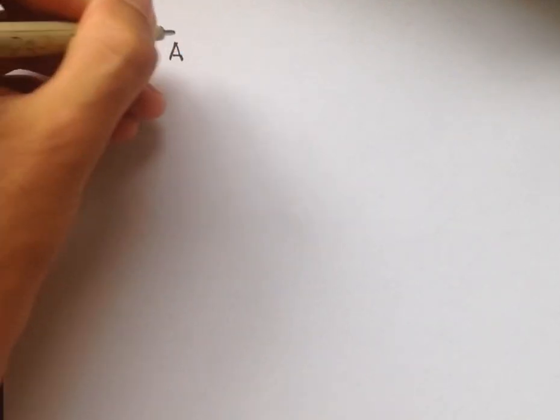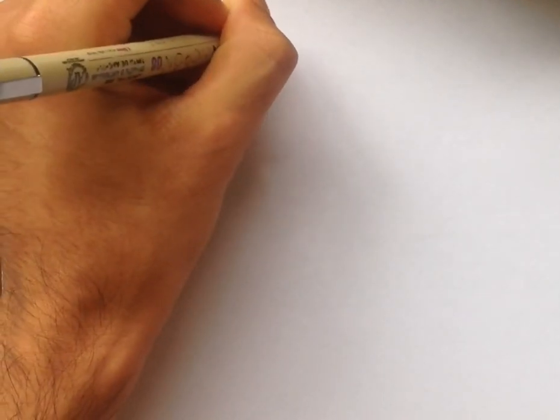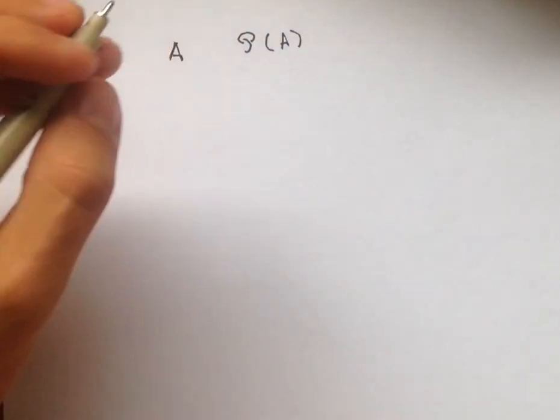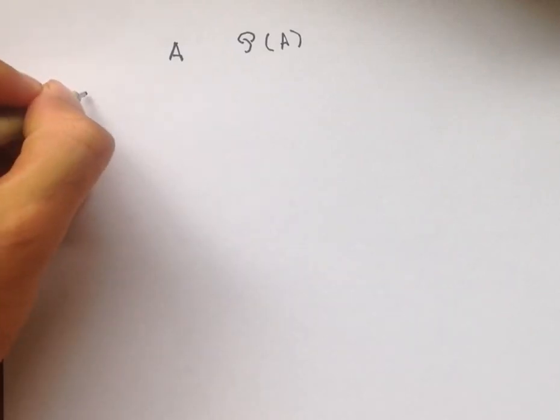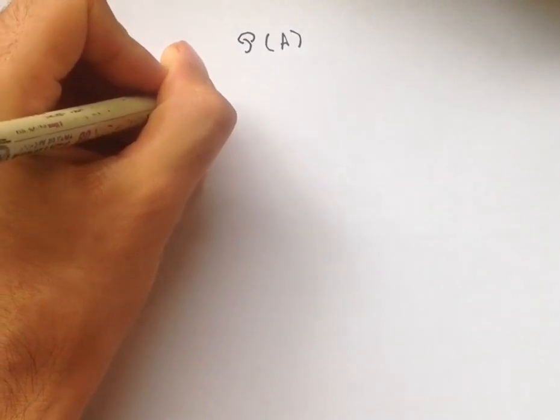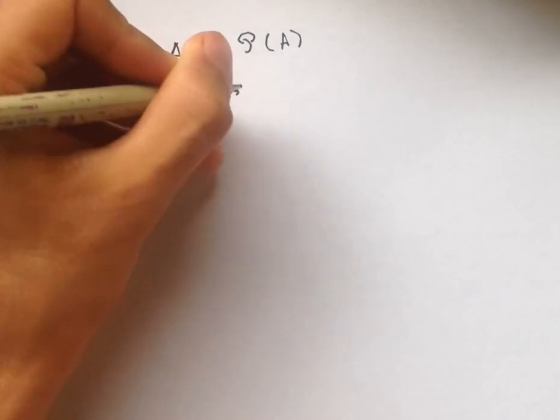So what we're going to do is show that for any set A, the power set of A has a greater cardinality than A. And we're going to do this by contradiction, by showing that there is no function F that is a surjection from A to the power set of A.